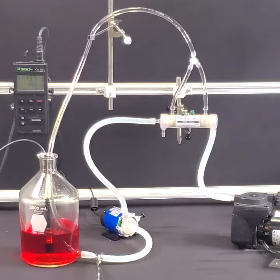This video demonstrates how to use a PermSelect silicone membrane gas exchanger to oxygenate bioreactor media and fermenter broth. Shown in this setup is a two-liter bottle containing one liter of red dyed water simulating cell culture media.